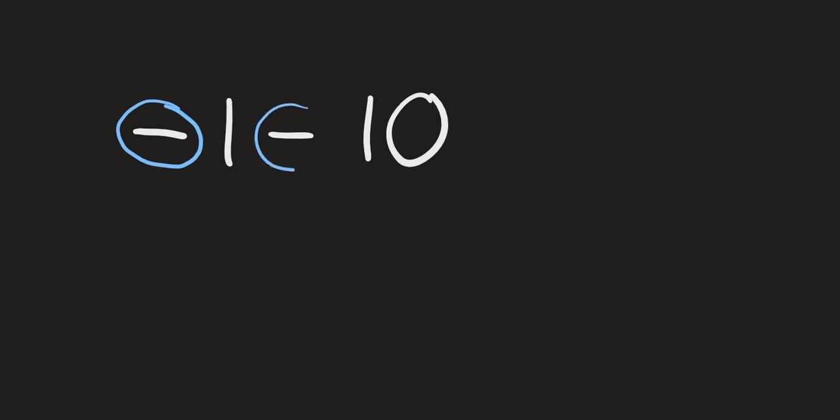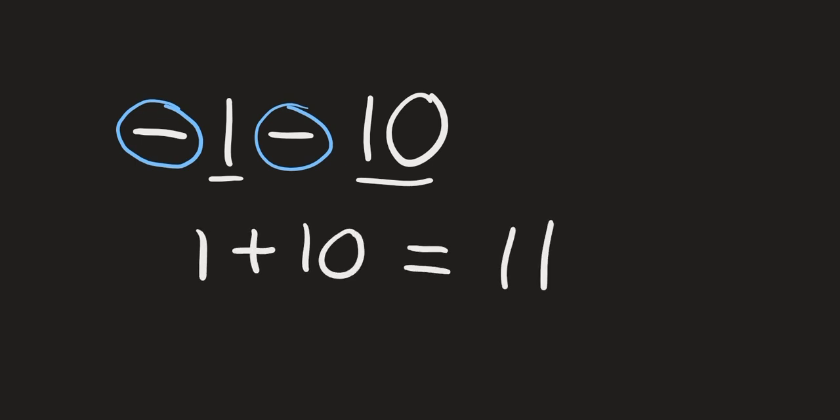Next we have negative 1 minus 10. Do these two numbers have the same sign or different signs? Negative 1 is negative, and our 10 is also negative, which means the two numbers have the same sign. Whenever the two numbers have the same sign, we add them together — 1 plus 10 is 11 — and keep the sign that both numbers have, so the answer is negative 11.